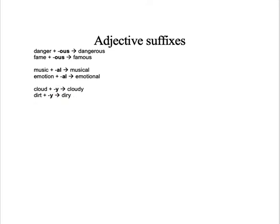One more suffix is '-ive'. For example, 'attract' is a verb, and you add '-ive' so that you have 'attractive' — and voilà, you have an adjective. Or for example 'create': you add '-ive' and you have 'creative'.